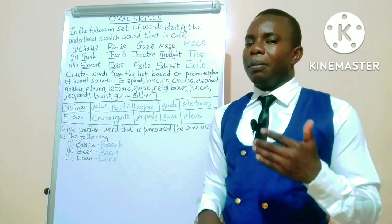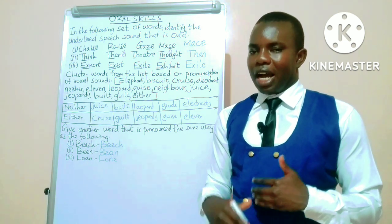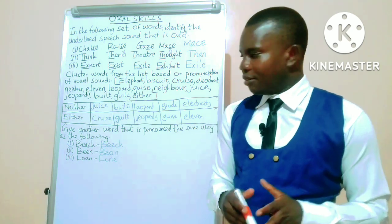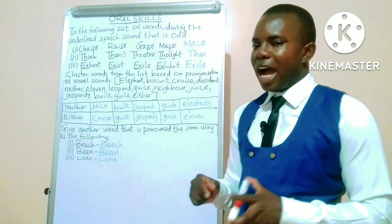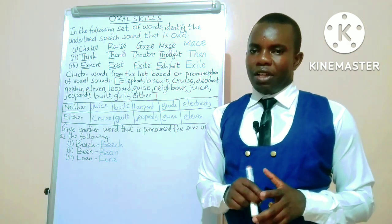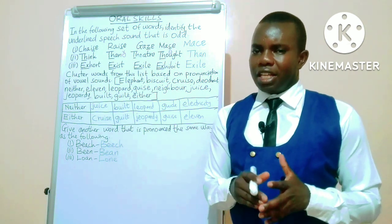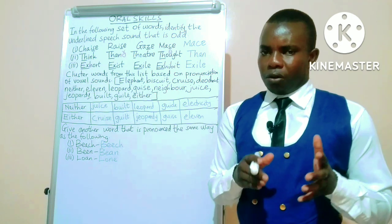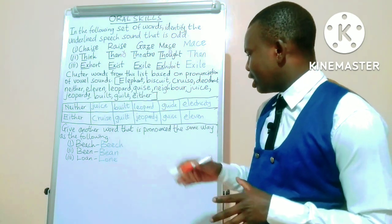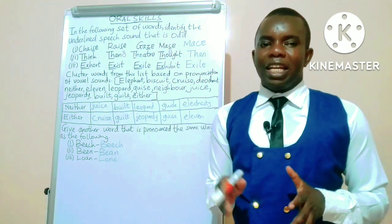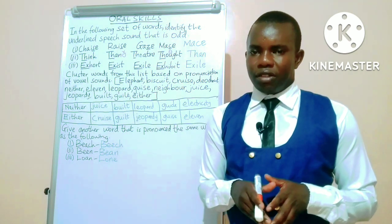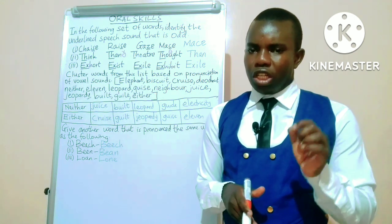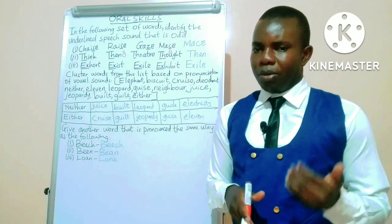We also have jeopardy and leopard with the vowel sound /ɛ/. Then we have guide and guise with the diphthong /aɪ/ in both words. Lastly, we can also have electricity and eleven with the sound /ɛ/ that comes at the beginning of both words.